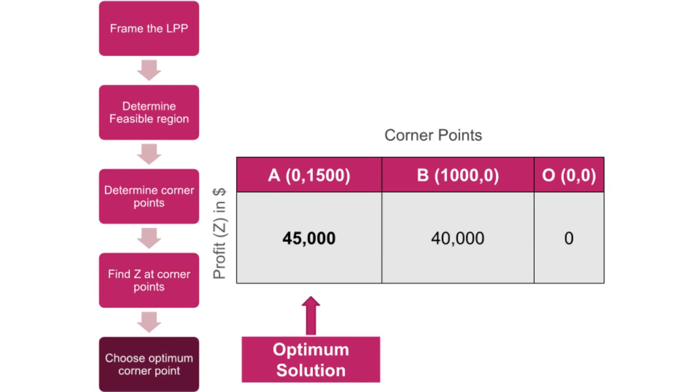Since we had to maximize the profit, the optimum solution is point A where 1,500 units of B are being produced and the profit achieved is $45,000.